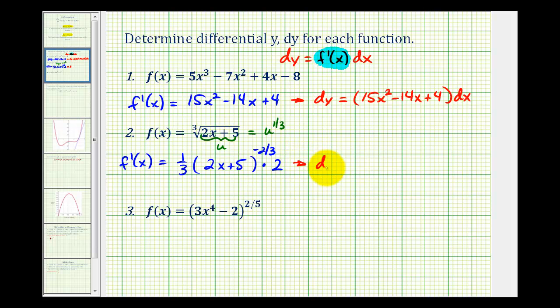Which means differential y is going to be equal to this derivative. Let's write this as 2 in the numerator. The denominator is going to be 3. We'll move this down to the denominator, so we'll have the quantity (2x + 5) to the two-thirds times dx.